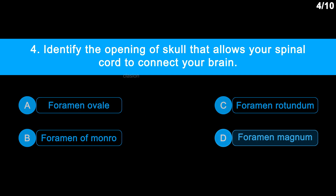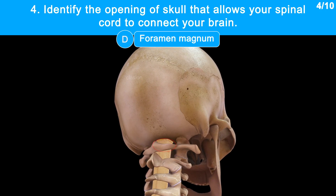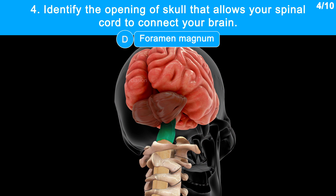The correct answer is Option D: Foramen magnum. Foramen magnum is the largest oval-shaped opening in the occipital bone of the skull, through which the medulla oblongata passes, linking the spinal cord and brain.